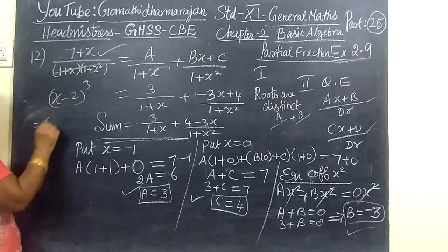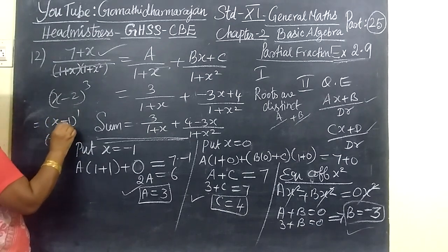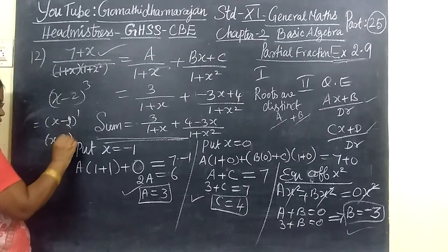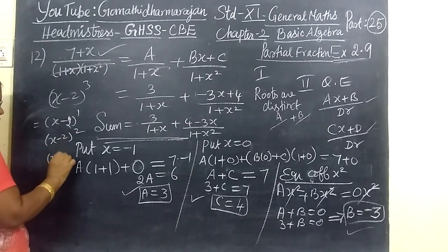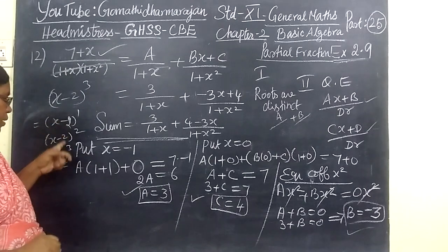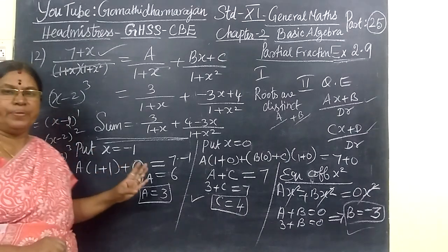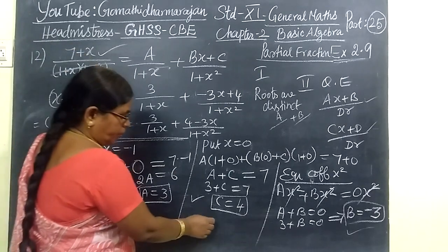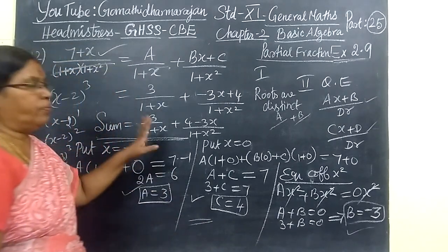Then for repeated roots, suppose x minus 2 power 2, repeated. Here you write x minus 1 power 1. Then x minus 2, x minus 2 power 2 or x minus 3 power 3. This is for A by, B by, and C by. So many times we have seen this. Just for review I am saying this formula.